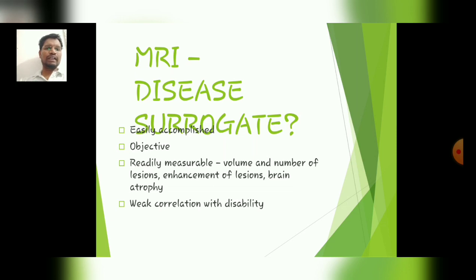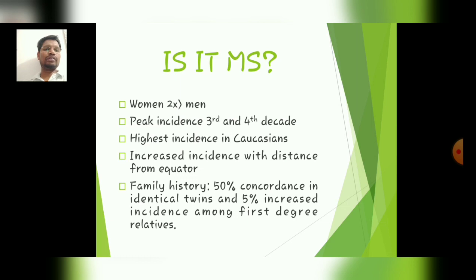We are continuing with MRI, which involves disease monitoring as it is easily accomplished and is objective in nature. The third criterion is that lesion volume and number are readily measurable. There is enhancement of lesions which ultimately causes brain atrophy. The last one is the variable correlation with disability. Women are more prone than men, and the peak incidence is in the third and fourth decade, with the highest incidence in Caucasians and increased incidence with distance from the equator. Family history shows 50% concordance in identical twins and a 5% increased incidence among first-degree relatives.